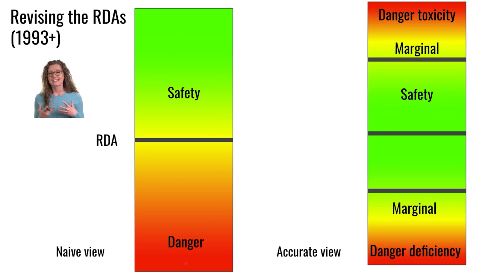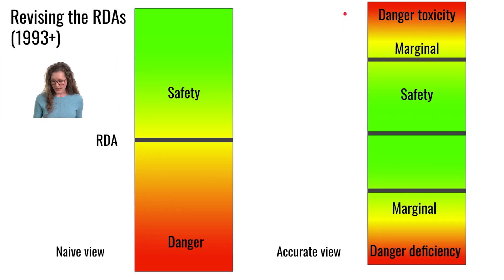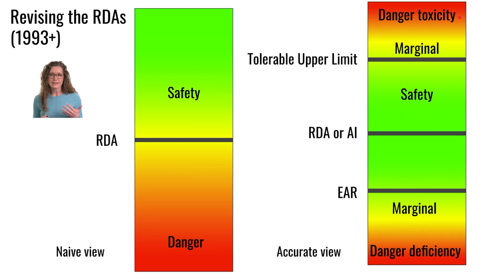What we understood is that yes, we do want to watch out for being deficient in a nutrient, but we were also really learning that there could be dangers of having too much of a nutrient. If you have too high an intake of a particular nutrient, you could be at risk of toxicity. So we really have to have this Goldilocks level in the middle for safety — we want to avoid deficiency and also avoid toxicity. Based on that, in the 1990s they started developing other thresholds beyond just the RDA.